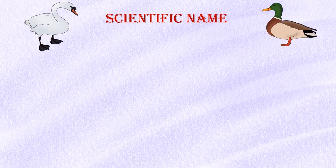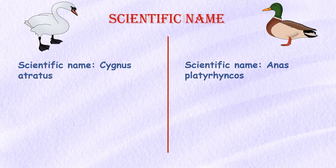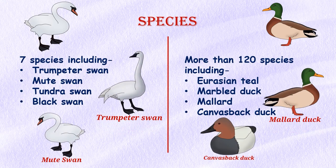Scientific name: The scientific name of swan is Cygnus atratus, while duck is Anas platyrhynchos. Species: There are seven different swan species in the world including trumpeter swan, mute swan, tundra swan, and black swan, while duck species number more than 120, including Eurasian teal, marble duck, mallard, canvasback, and many more.